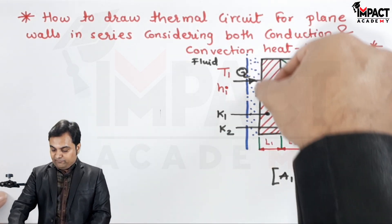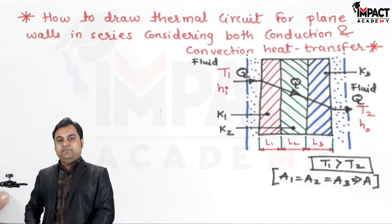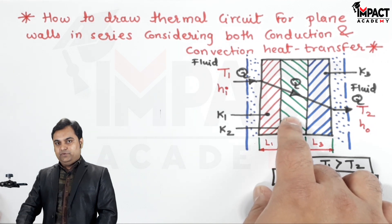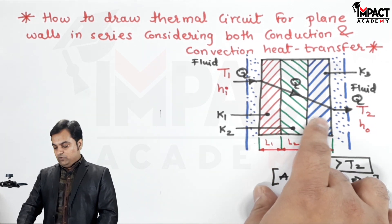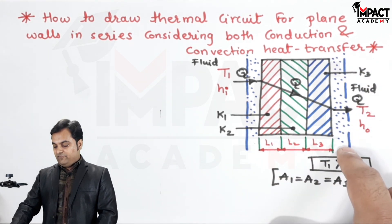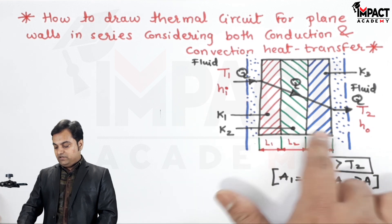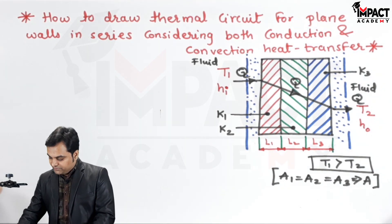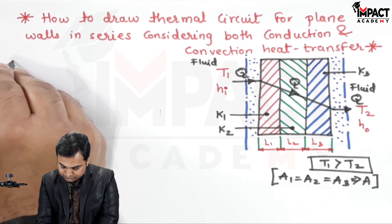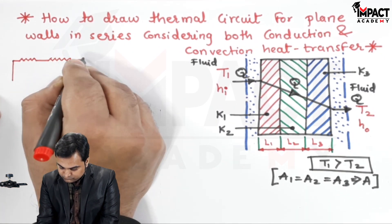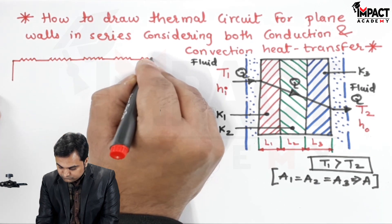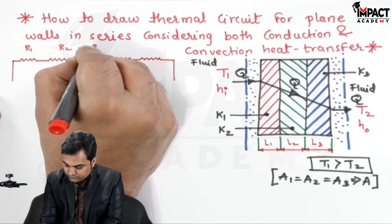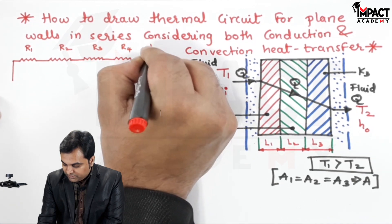First there is a convective film, so there will be a convective resistance. Then for wall one there is conduction, then conduction for wall two, then conduction for wall three, and finally another convective film. So in total there are five thermal resistances. I'll now denote them in the thermal circuit as R1, R2, R3, R4, and R5.